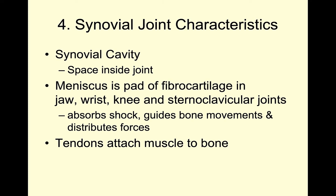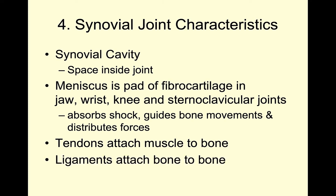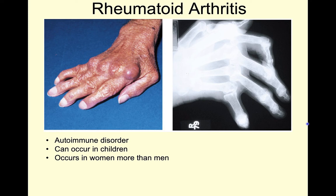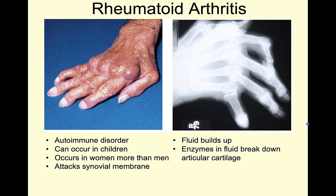Don't forget that tendons are what attach muscles to bones and ligaments are attaching our bones to other bones. It's important to think about what happens to synovial joints long term — they can get to the point where they don't even move, and these bones can actually ossify or fuse together. With rheumatoid arthritis, this is an autoimmune disorder that sometimes occurs in children but usually in older individuals and more often in females than males. Basically your immune system is attacking the synovial membrane and fluid builds up inside that joint. As that fluid builds up, enzymes also build up and end up breaking down the articular cartilage, so you lose that lubrication and those bones can ossify or fuse together.